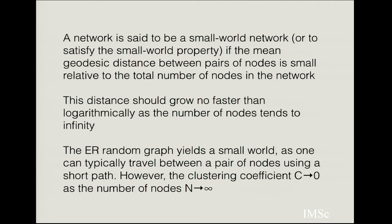A network satisfies the small world property if the mean geodesic distance between pairs of nodes is small relative to the total number of nodes, and grows no faster than logarithmically as the number of nodes tends to infinity. The Erdős–Rényi random graph is a small world in that you can typically travel between any pair of nodes via a short path. However, these differ from real-life networks because they have very little clustering as the number of nodes tends to infinity.